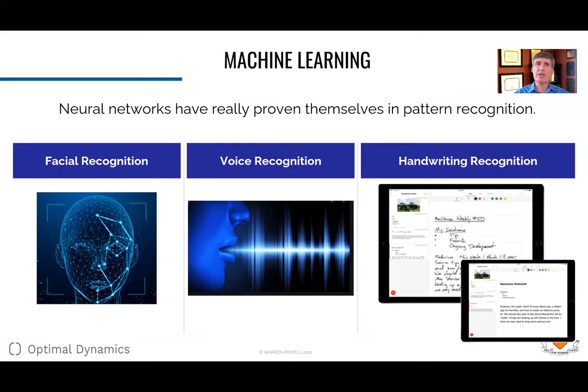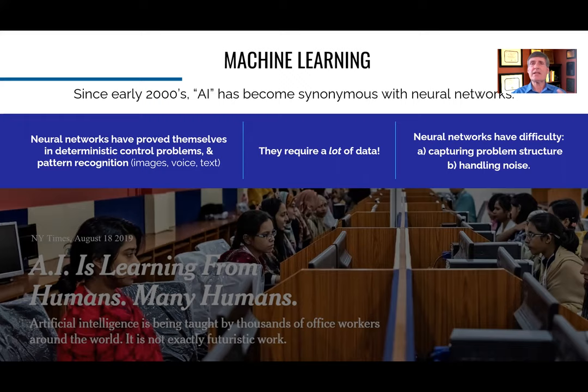Neural networks have really proven themselves in pattern recognition — facial recognition, voice recognition, handwriting recognition. One thing to realize is these are all deterministic problems and they take a lot of data. You need a dataset where somebody like a radiologist has said here are all these X-ray images, which ones have cancer — and a human has to label them. It's very powerful and has been very effective.